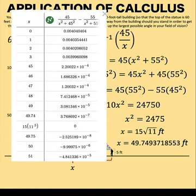which means that we have the highest possible point at this x value. Then at x greater than 15 square root of 11, notice that the slope of the curve are now all negative, which means that the function is decreasing. So this verifies that 15 square root of 11 is indeed the highest point.